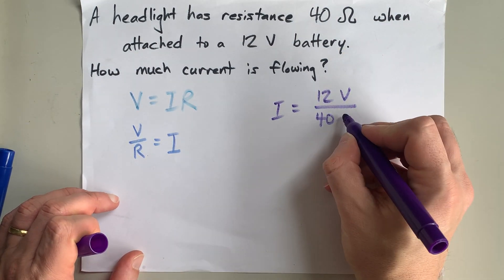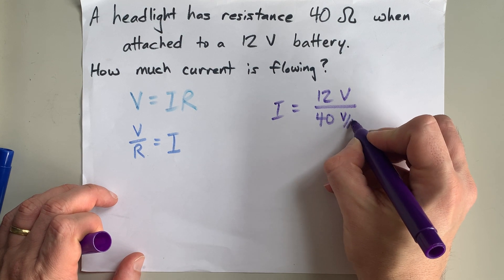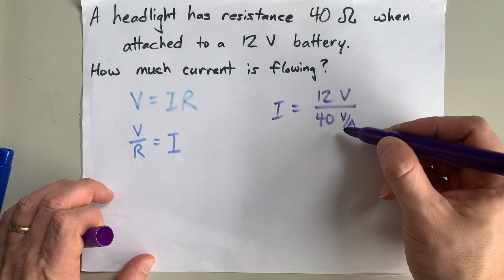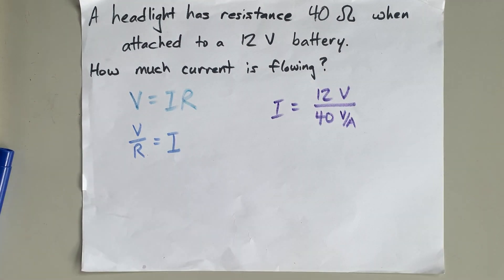By the way, ohms is another way of saying volts per ampere. Now, you'll note that the volts cancel out and we'll be left with amperes as our answer.